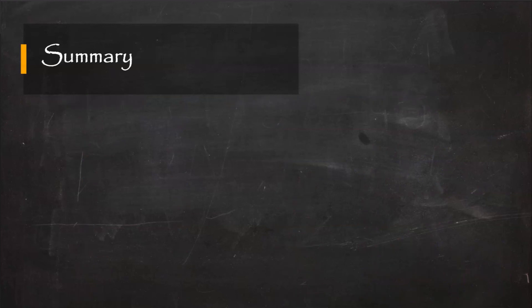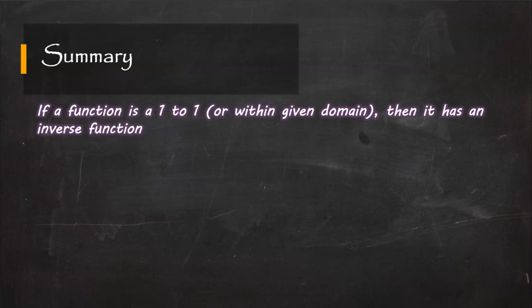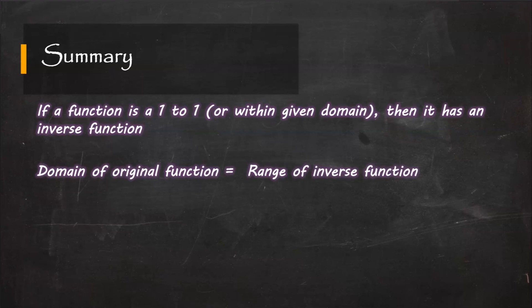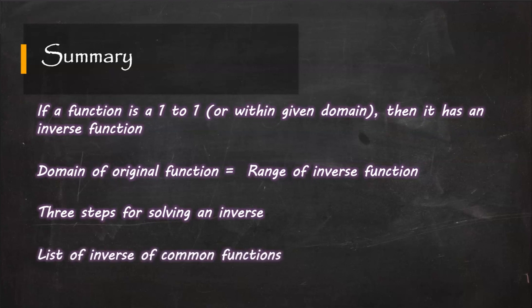To wrap up: if a function is 1-to-1, or is 1-to-1 within a given domain, then it has an inverse function. The domain of the original function equals the range of the inverse. We learned the three-step method for solving an inverse and the list of inverse functions for common functions. Try to memorize that list and get familiar with the whole procedure. That's pretty much it for today — see you in the next video. Thank you for watching!